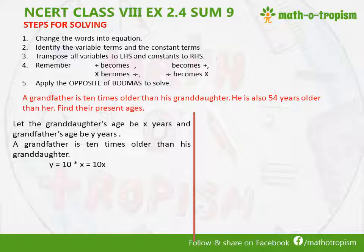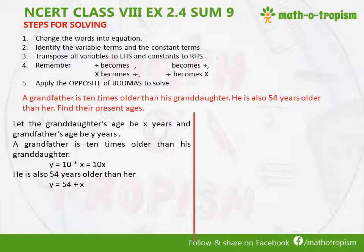He is also 54 years older than her. It means whatever the age of the granddaughter is, if we add 54 — older means 54 years more than her, so it means adding. So Y is also equal to 54 plus X. 54 years older means plus, so plus X.